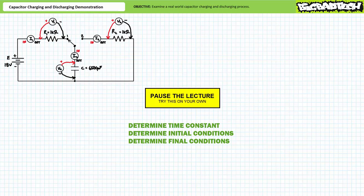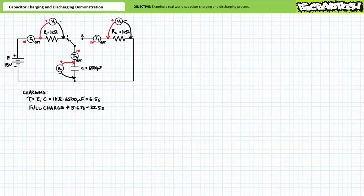If you're tracking, you should have arrived at the following values. The time constant for the charge circuit is the resistance value of R1 times the capacitance value. Substituting in the given values of one kilohm and 6500 microfarads, we obtain a time constant of 6.5 seconds.